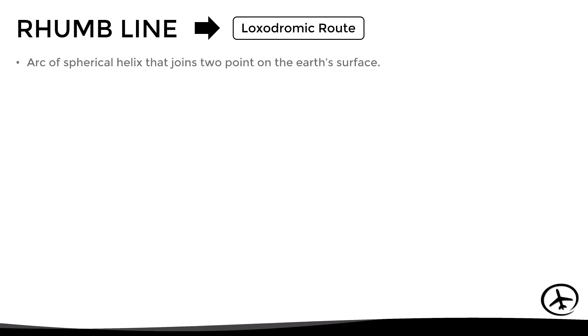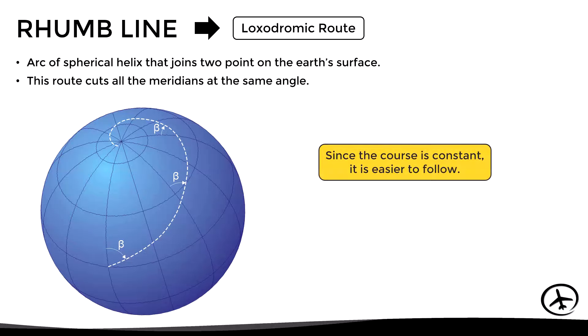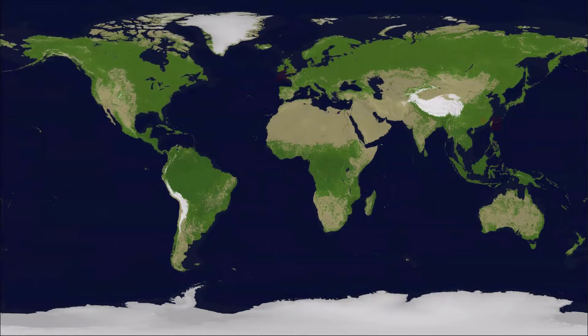Now, if we draw a straight line between A and B, what would this route be referred to as? This route is known as a rhumb line or loxodromic route, defined as an arc of a spherical helix that joins two points on the Earth's surface. What is important to note is that it cuts all the meridians at the same angle. The angle between a meridian and the route is known as the course, so since the course is constant, this type of route is easier to follow, and when represented on a regular map it appears as a straight line.